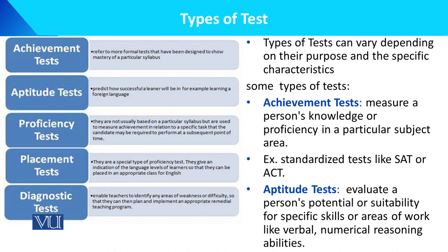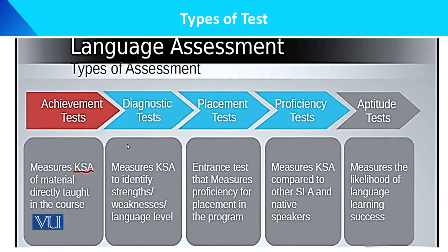Aptitude test — aptitude test असल में रुझان का test होता है — it evaluates a person's potential suitability for a specific skill area of work, like verbal, numerical, and reasoning abilities, or computer skills. Proficiency test measures mastery of something. Placement test is used to place students at the right level. Diagnostic test checks a student's level of understanding, achievement, strengths, weaknesses, and needs.